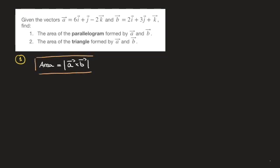Do make a note of that formula if you hadn't seen it before. To make sure we're all clear on what we're finding: we have a vector a and a vector b, and the parallelogram whose area we're trying to find is the one formed by these two vectors. If I draw dotted lines parallel to vector b and parallel to vector a, the area we're trying to find is the shaded gray region.